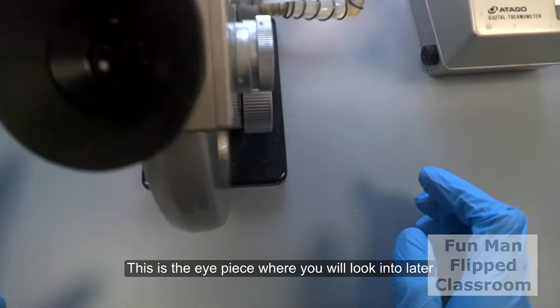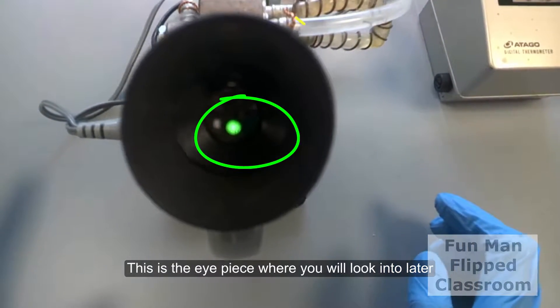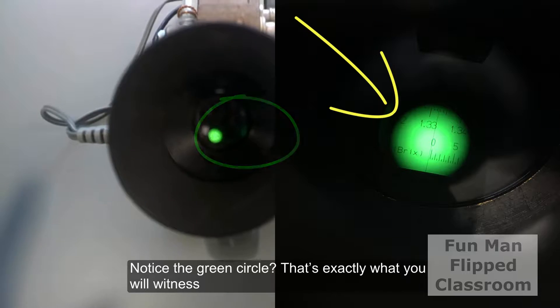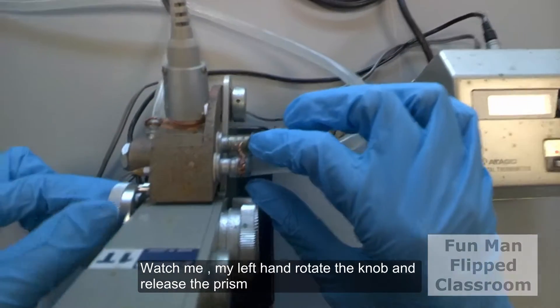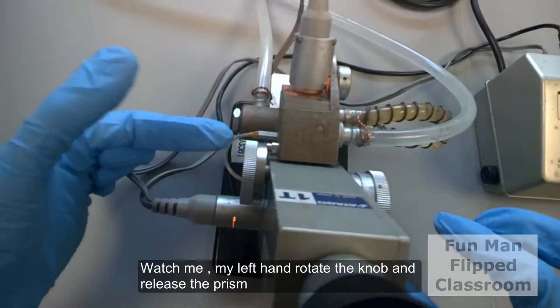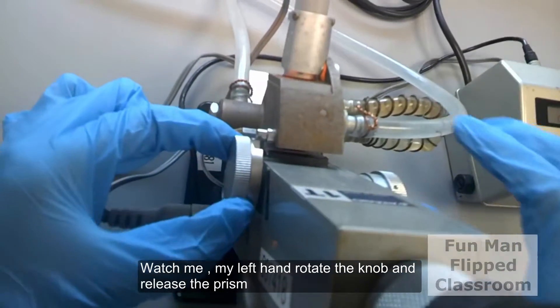This is the eyepiece where you will look into later. Notice the green circle? That's exactly what you will witness. Watch me. My left hand rotates the knob and releases the prism.